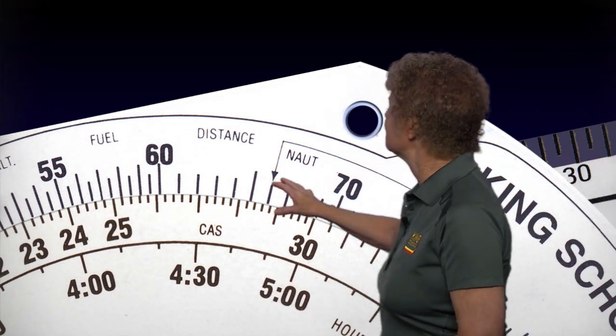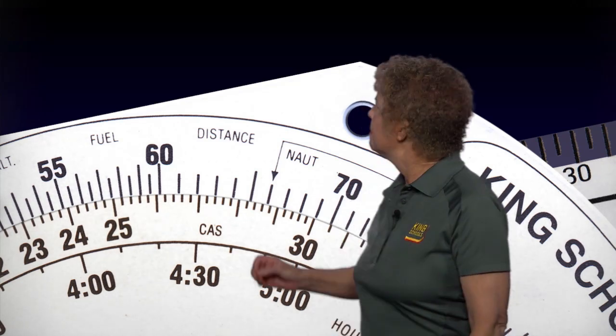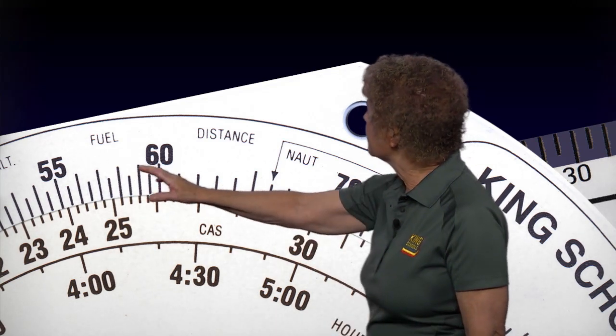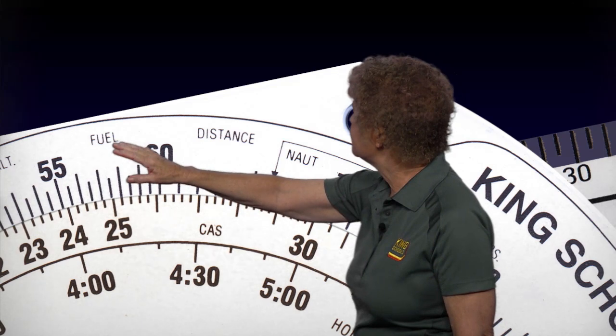Looking at the flight computer again, the outside scale not only represents miles — notice on the left side of the 60 it says 'fuel.' So the outside scale of the flight computer can also represent gallons.